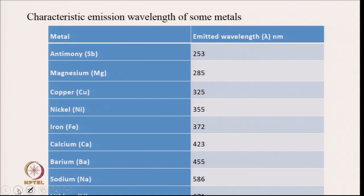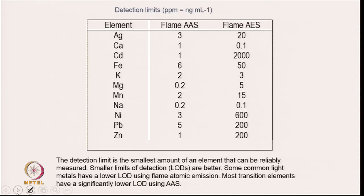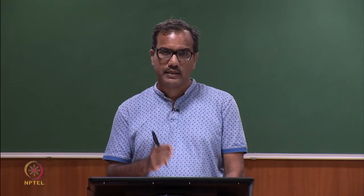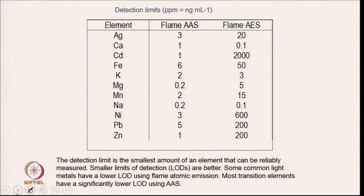There are characteristic emission wavelengths for different metals: antimony/carbon at ~253 nm, copper at 325 nm, nickel at 355 nm, and iron at 372 nm. If a peak is seen at 355 nm, nickel is present in the sample. Detection limits differ between flame AAS and flame AES methods.